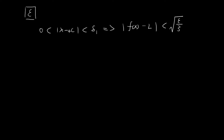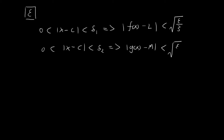Since the limit of f(x) exists as x tends towards c, we also know there exists a delta2 such that if |x - c| < delta2, then |g(x) - M| < √(ε/3). We know this delta always exists because the limit of g(x) exists as x tends towards c.